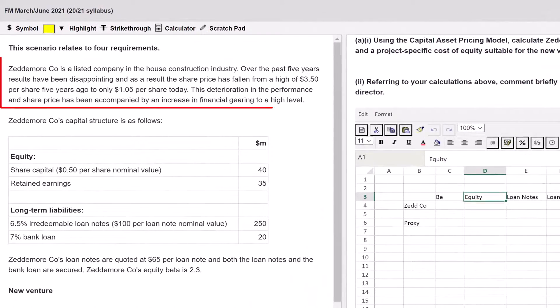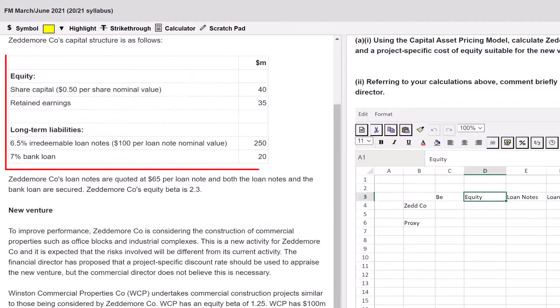Let's look at the scenario. Zeddymore is a listed company in the house construction industry. Over the past five years, results have been disappointing. The share price has fallen from $350 to $105 today. Deterioration in the performance and share price has been accompanied by an increase in financial gearing. We have an extract here with the share capital retained earnings. Note that it says 0.50 per share nominal value, that's the par value. It's not one, it's 50 cents. We've got two sets of long-term liabilities, which are long-term debt, irredeemable loan notes and a bank loan. Just check, it's also got an equity beta of 2.3 for Zeddymore.